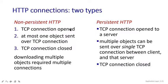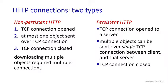Second point: in non-persistent, at most one object is sent over a TCP connection. You can send only one object at a time; otherwise there will be congestion — you cannot send more than one packet or object. But in persistent, as the server gets the connection, the server can send multiple objects using a single TCP connection. Multiple objects can be forwarded to the client side between client and server, but using a single TCP.